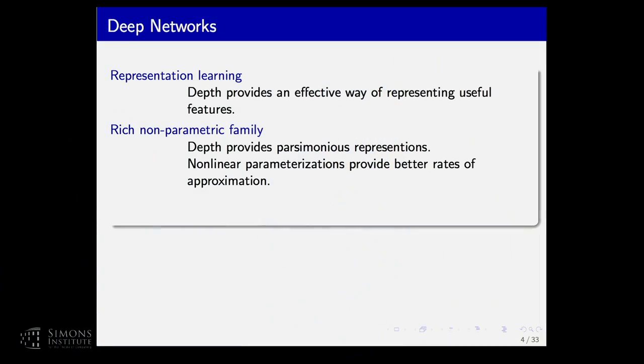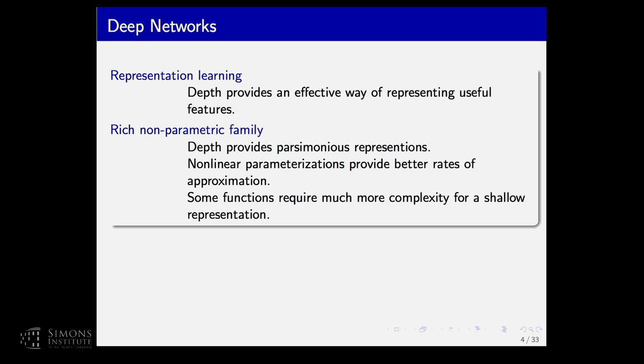Within a statistical approach, having things composed provides a parsimonious representation. It's been known for a long time that nonlinear parameterizations give much better approximation than linear ones — going back to splines with free knots versus any linear class. More explicitly, there are constructions of functions that require hugely more complex representations if you use a shallow net versus a deeper net, or even go one layer shallower. Matus, Telgarsky, and others have examples where you need a much more complex network in a shallower representation, so depth is providing something in that sense.